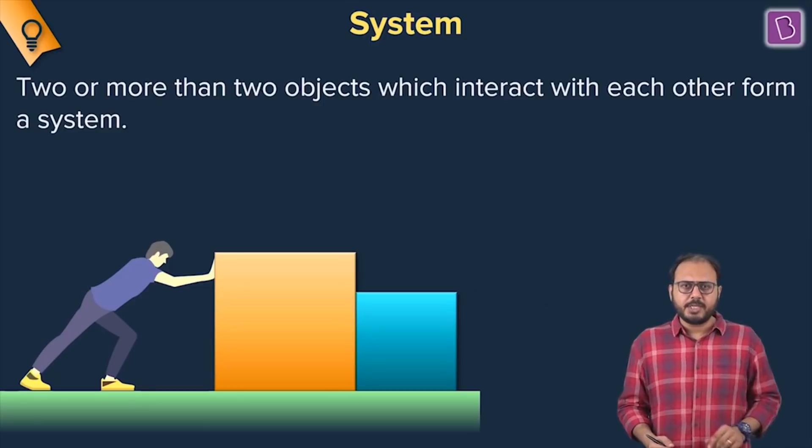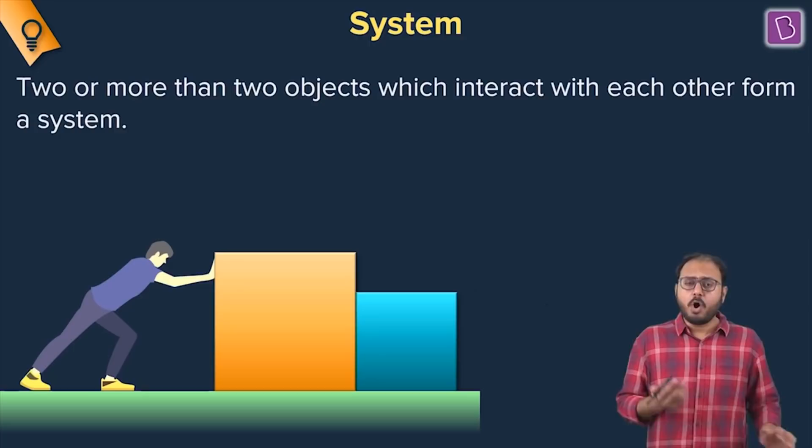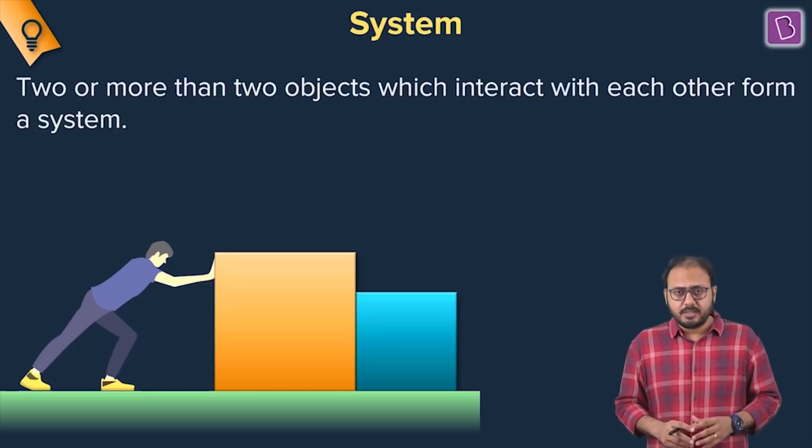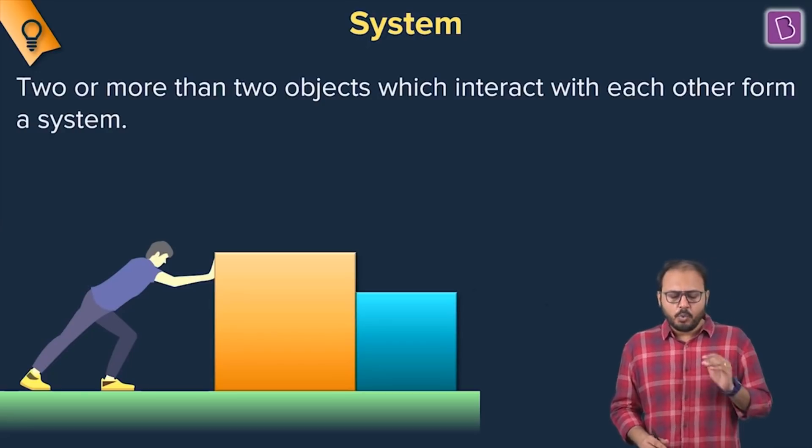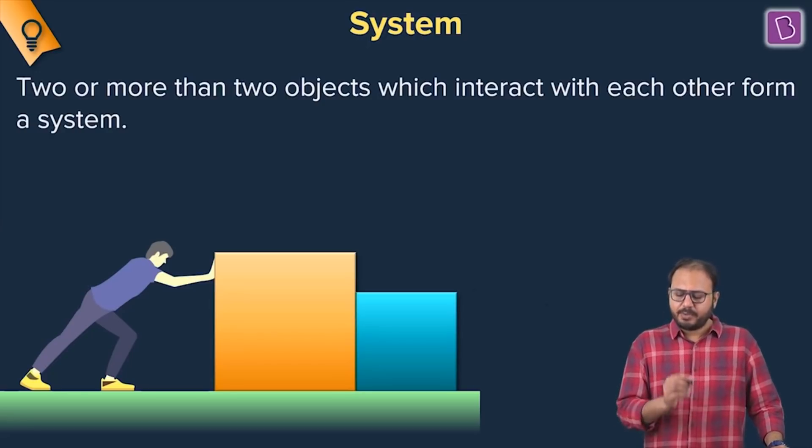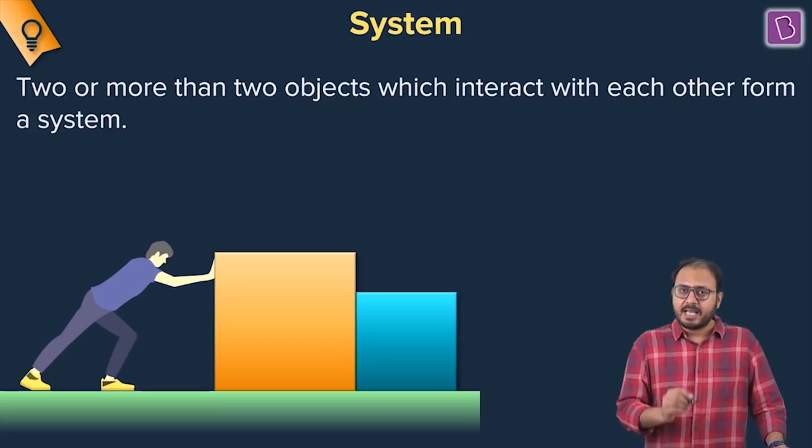System can have one object, one scenario, two objects which can interact with each other, three objects, two or more. So one definition is two or more than two objects which interact with each other form a system.